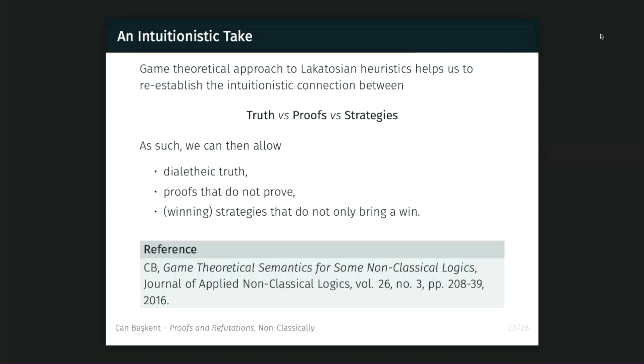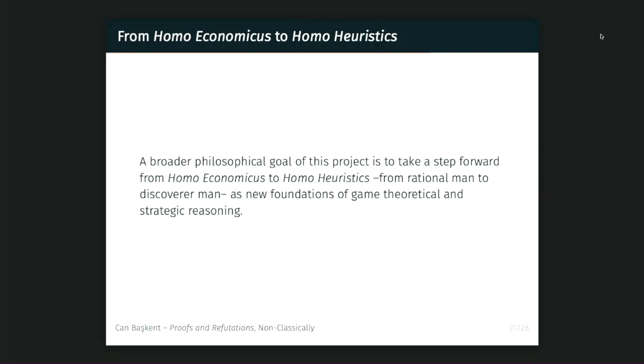Another direction in this project is the intuitionist's take on this. The valuable connection between truth, proof, and strategies from an intuitionist's perspective can be realized. When you realize intuitionism, you get paraconsistency. If you realize this connection using the elements of proofs and refutations, instead of truth you have dialectic truth; instead of proofs, you have proofs that do not prove; instead of strategies, you have winning strategies that not only bring the win but also in addition bring the loss. You can come up with the foundational elements of a new game theory using the dualized notions of intuitionist logic.